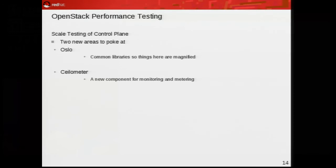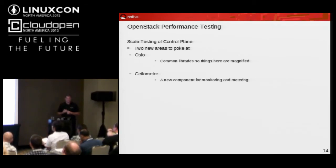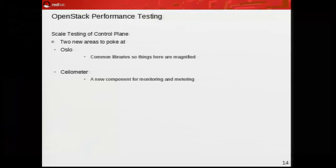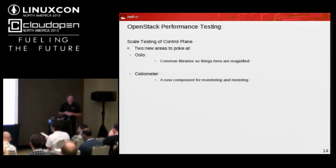The two new areas we're going to poke at: one is Oslo, the common library. I want to make sure I have a Python developer I can put on that — not just someone to go test, but someone who knows Python in and out that can say 'this is the bottleneck because you're using this kind of thread, not that kind of thread' and fix things across the board. Then with Ceilometer, we're waiting for it to gel enough that we can actually start testing with it. That's going to be critical — it needs to perform well and not be intrusive.